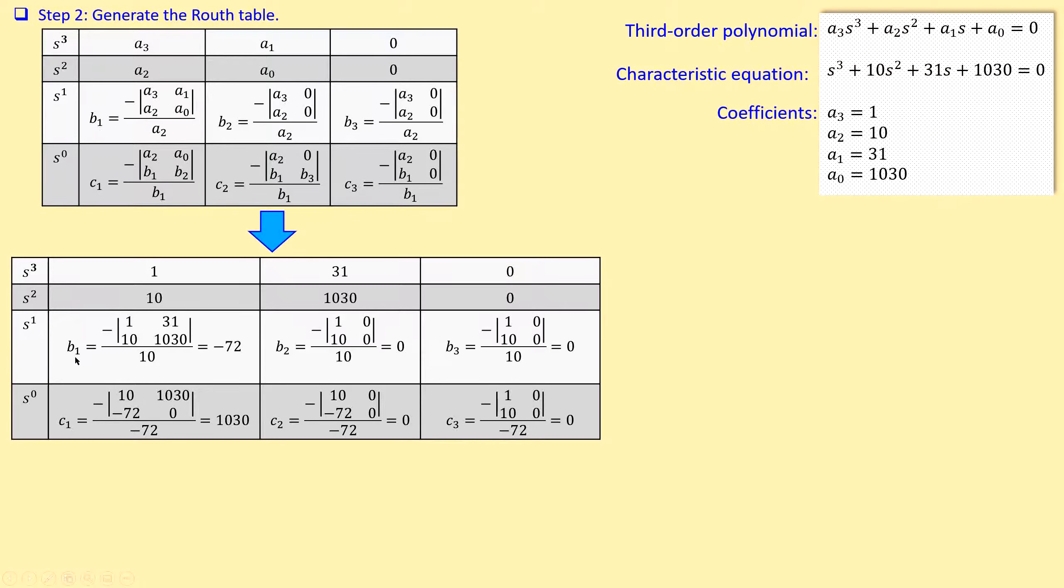In order to calculate b₁, I just use this formula, and I have all the necessary elements for b₁. Just substitute the values using the determinant and a minus sign in front, and divide by a₂, which is 10. I get minus 72 here already. And for b₂, I can use this formula, and since I need a₃, a₂, I have all that, and this is just zero. You substitute the values, you will get here if you do the math, just zero.